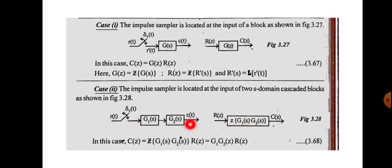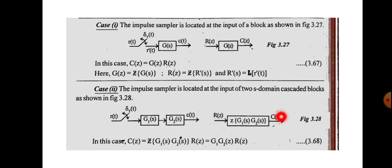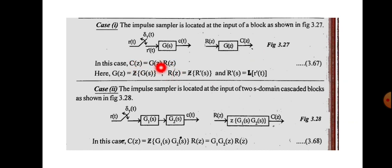C(z) is the Z-transform of C(s). First we find C(s) then take the Z-transform to get C(z). In this case, C(z) = Z{G1(s)·G2(s)} · R(z). This can be represented as G1G2(z) · R(z). Similarly for case one: C(z) = G(z) · R(z).